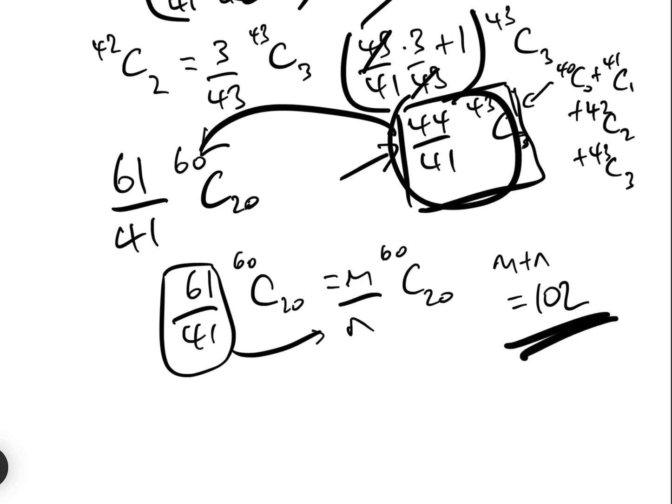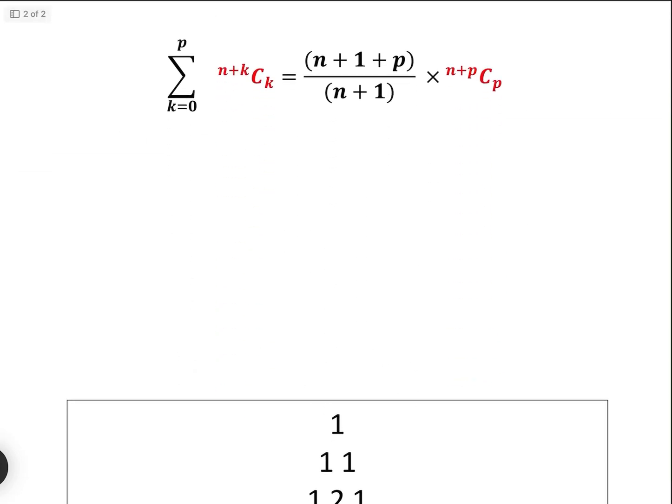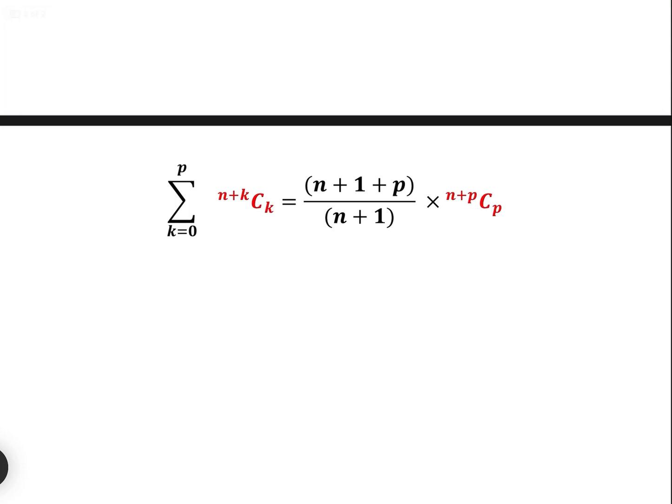In actual fact, it's a little bit tricky doing this in an exam, and we can generalize the formula by using exactly the same method. We can generalize the formula to this little beauty here. As long as it starts with K equals 0, we can sum between K equals 0 and P, N plus K C K, and it's simply N plus 1 plus P over N plus 1 times N plus P C P. If you can remember this, basically we can answer that question that we just did by inspection.